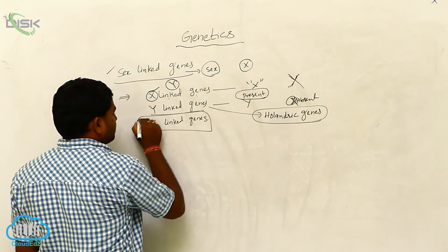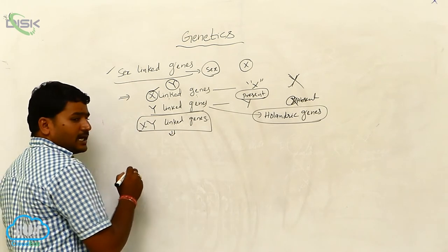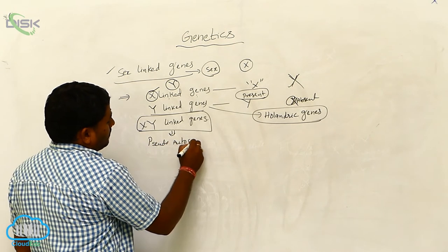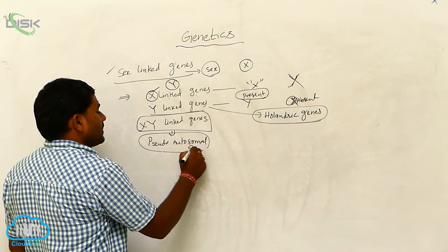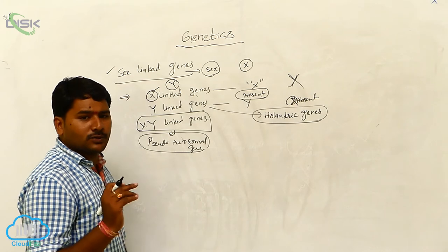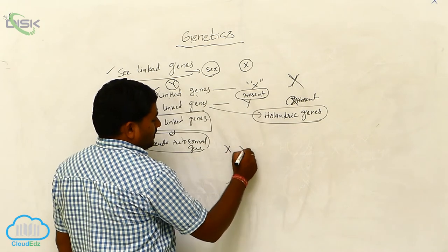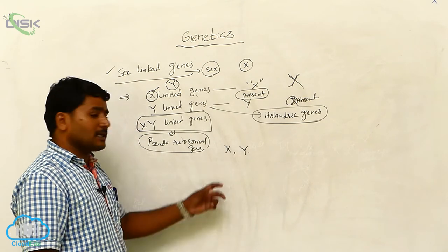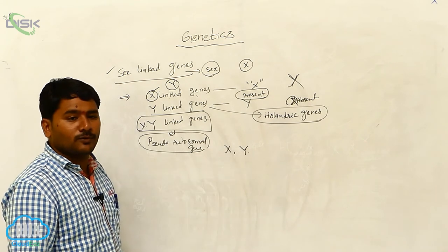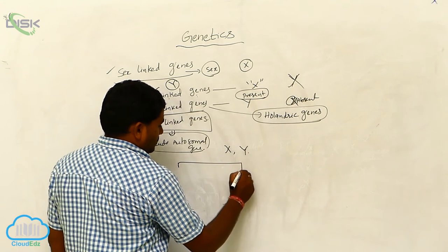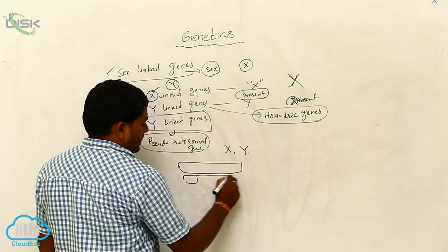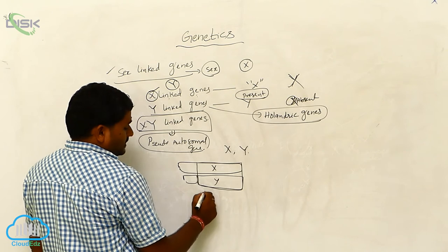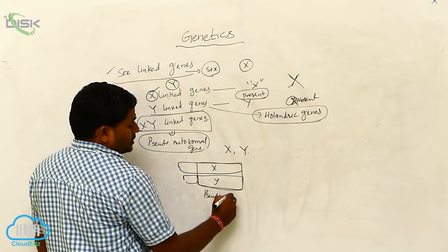X-Y-linked genes are actually called pseudo-autosomal genes. Why? Because these genes are present on both sex chromosomes — they are present on the X chromosome and they are also present on the Y chromosome, like autosomes. For example, this is the X chromosome and this is the Y chromosome. If these two regions have the same number or same type of genes, they are called a pseudo-autosomal region.